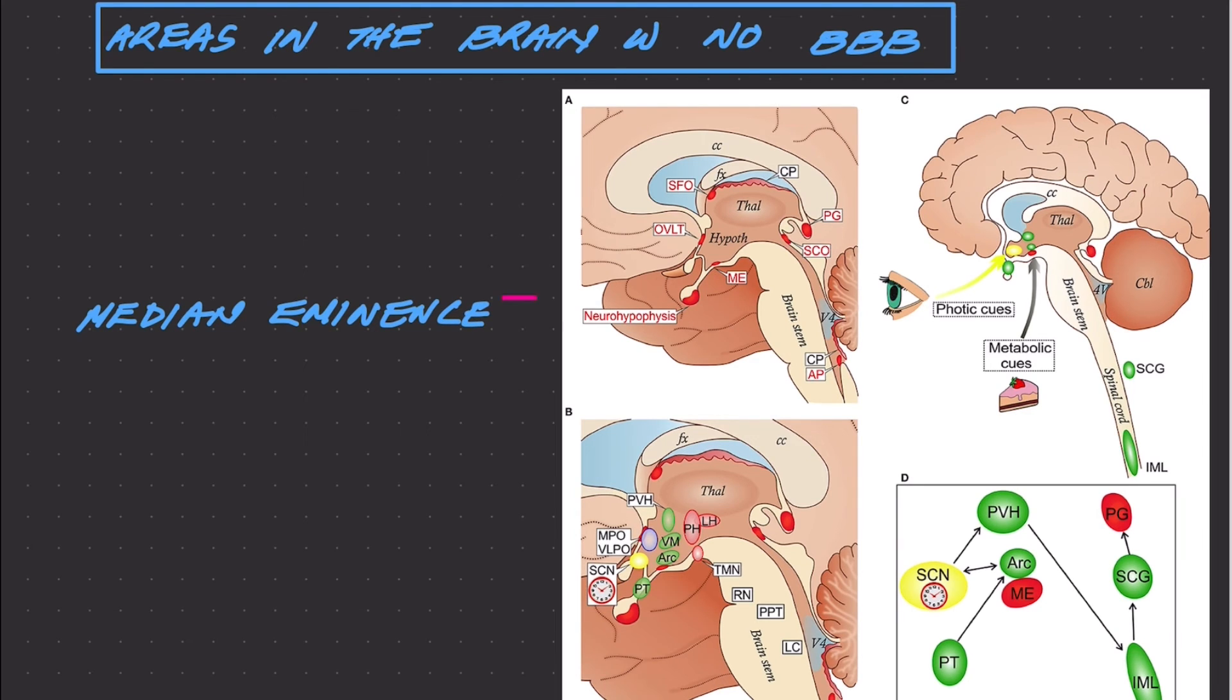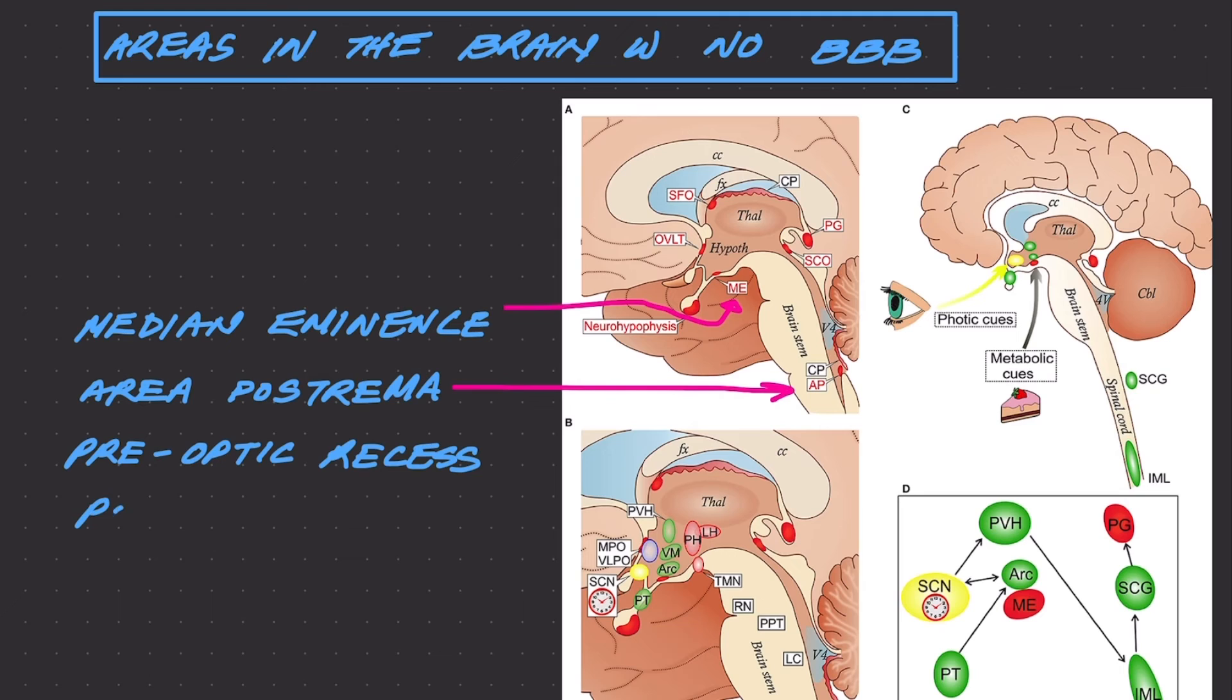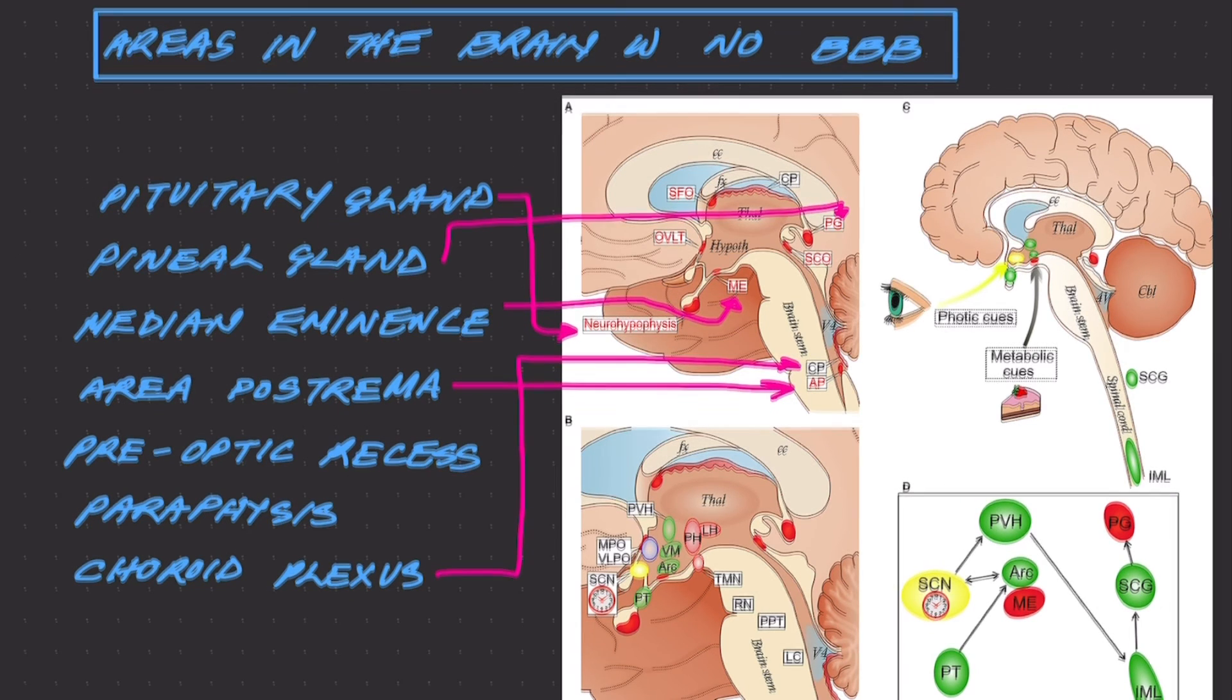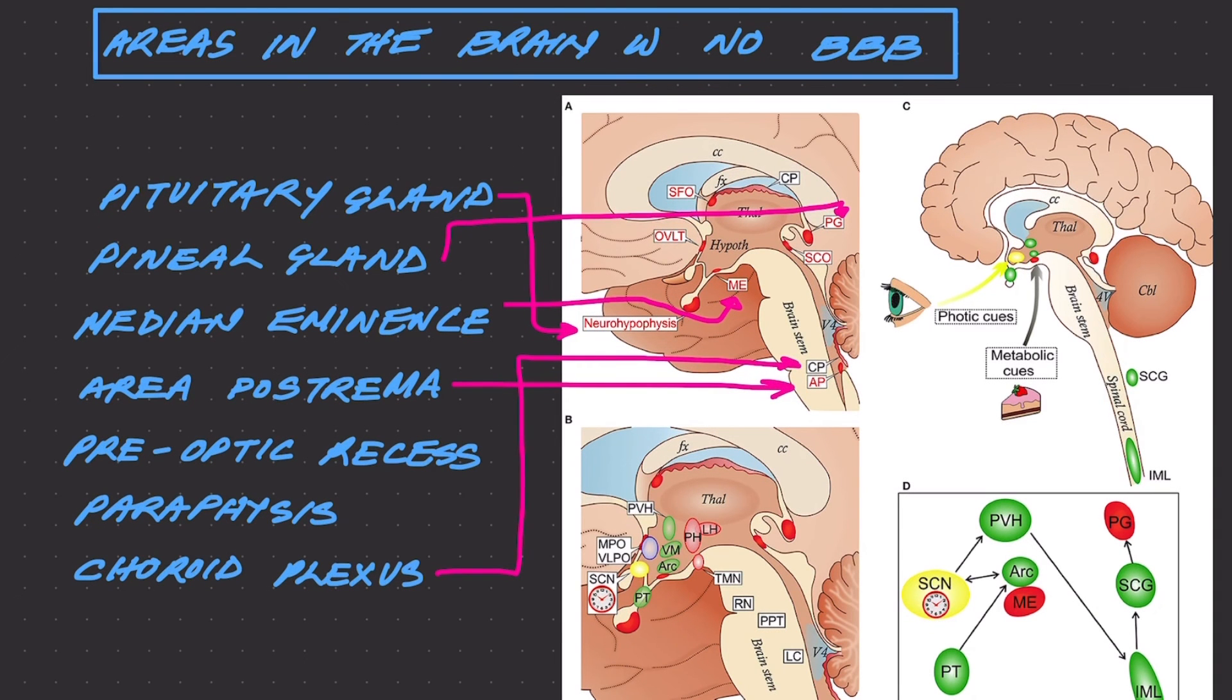These include median eminence, area postrema, preoptic recess, parafysis, pineal gland, endothelium of choroid plexus, pituitary gland, especially neurohypophysis - also called the posterior pituitary - which is responsible for releasing ADH into the blood.